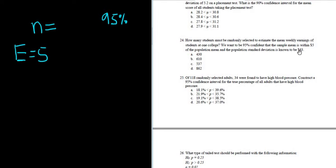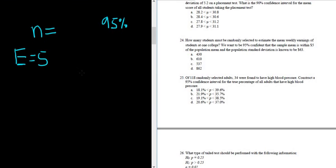And the population standard deviation is 63. That's sigma. So sigma, in this case, is the population standard deviation.